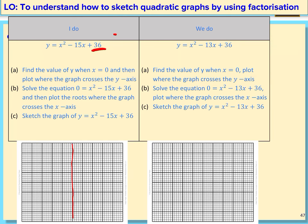After doing that, we're going to draw our axes with a ruler. We label the scale: 12, 24, 36 on the y-axis, and 3, 6, 9, 12 and negative 3, negative 6, negative 9, negative 12 on the x-axis.